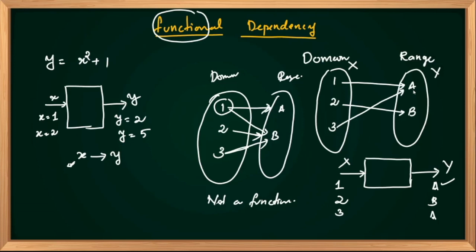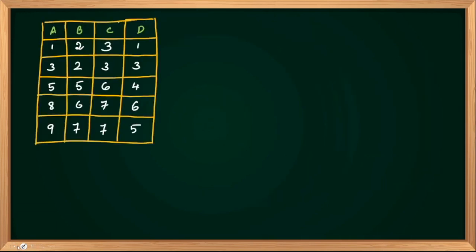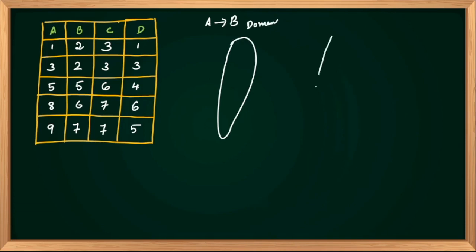This is DBMS. We will explain this and discuss the SQL concept later. This is the table. For example, A determines B. This is the function. Basically, A determines B. This is the domain, and this is the range of B.